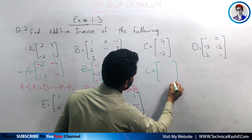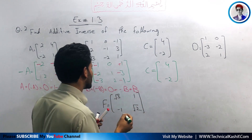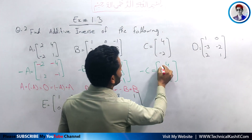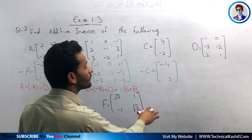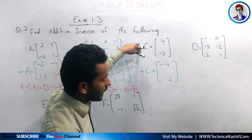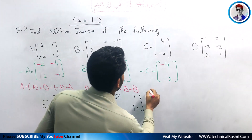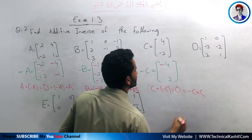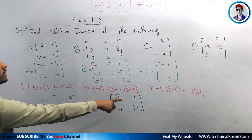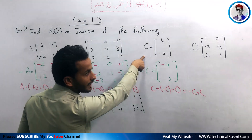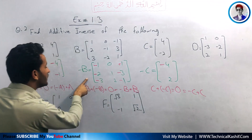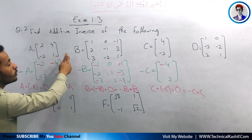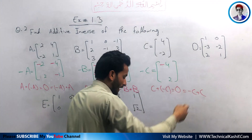For matrix C, the additive inverse is minus C. Matrix C has elements 4 and minus 2. Changing signs: 4 becomes minus 4, and minus 2 becomes plus 2. So C plus (minus C) equals the null matrix, which equals minus C plus C. Note that the null matrix has the same order as the original matrix — 2 by 2, 3 by 3, or 2 by 1.